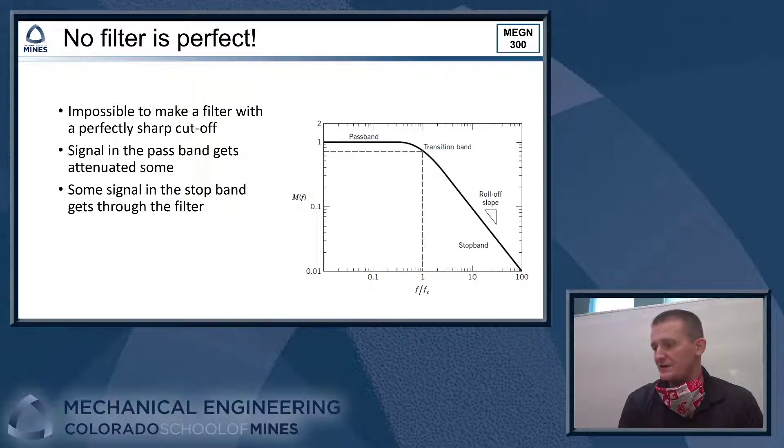And then as you get to the stop band, there's always a little bit of the signal that's in the stop band that makes it through the filter. So the filter will reduce it a lot, but it won't ever take it perfectly to zero. And then there's some transition in between the pass band and the stop band where you get some attenuation, some reduction in the magnitude of those frequency components, but not a perfect clean cutoff that you would want with an ideal filter here.